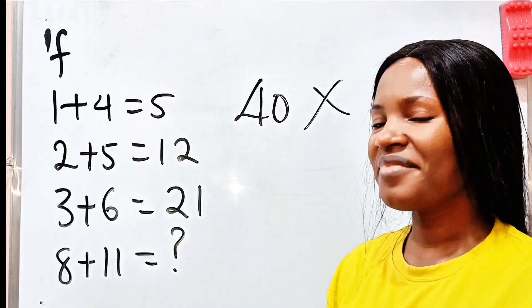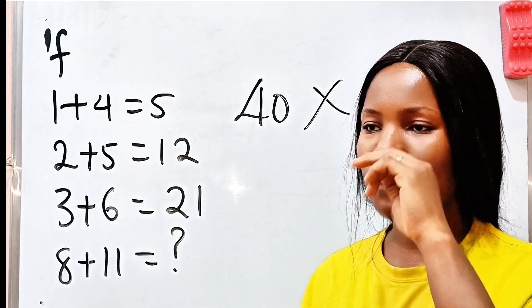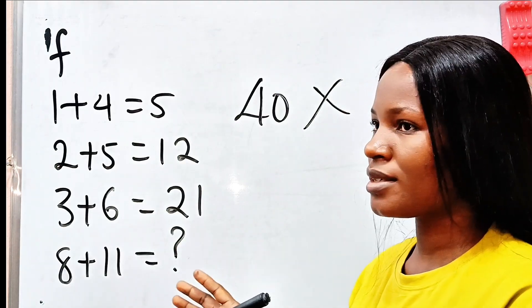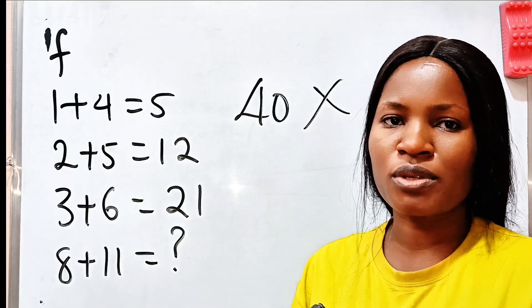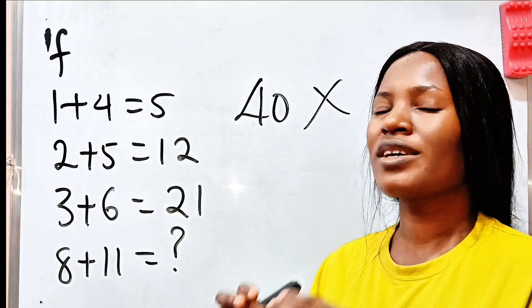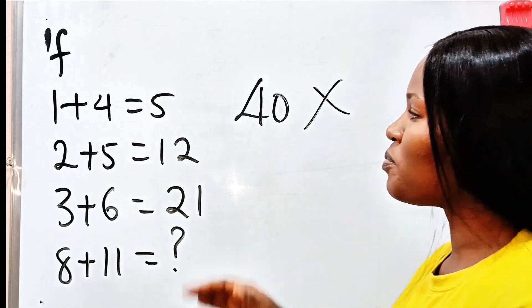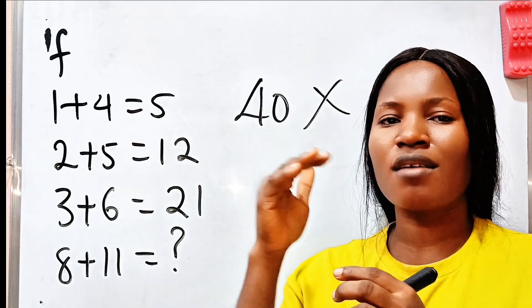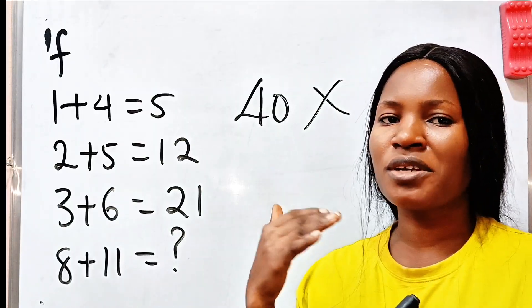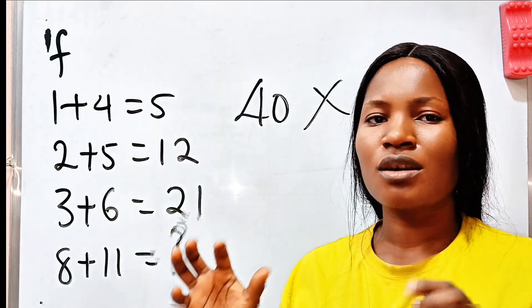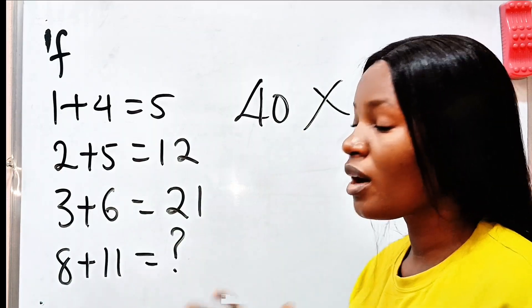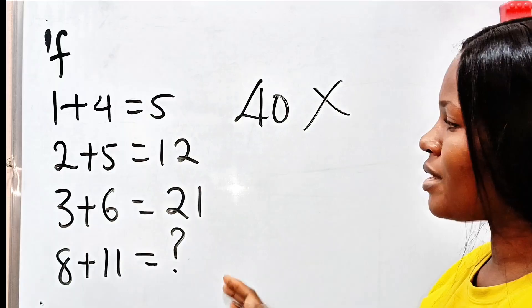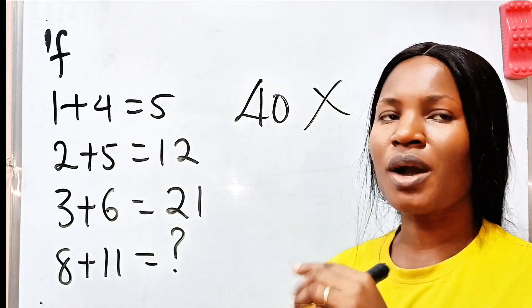Yes. Now like I said, we will solve this using two methods. Whenever you have an IQ question like this, the best and most efficient approach to avoid mistakes is to establish a formula because there must be a formula that is used to get all these things. They must have a sequence, they must have a pattern. So once you are able to establish that pattern and use that pattern to form a formula, you are actually going to get your answer. Definitely. Now, this person established a pattern but something went wrong somewhere, we shall highlight later.